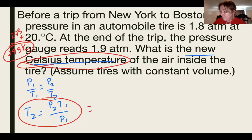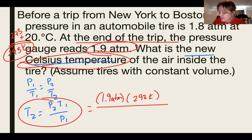So I've got T1, 293 K, and my P2 at the end of the trip, 1.9 atm, and my P1, which is 1.8. And I cut those and I get out my calculator to do 1.9 times 293 divided by 1.8. And I get 309.